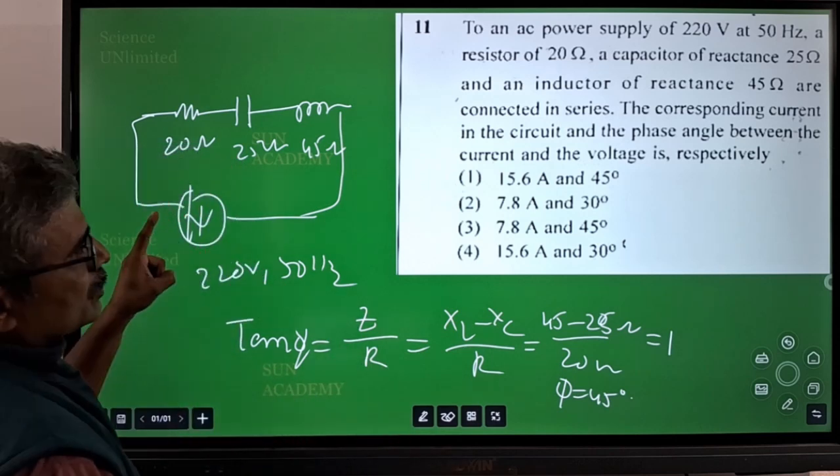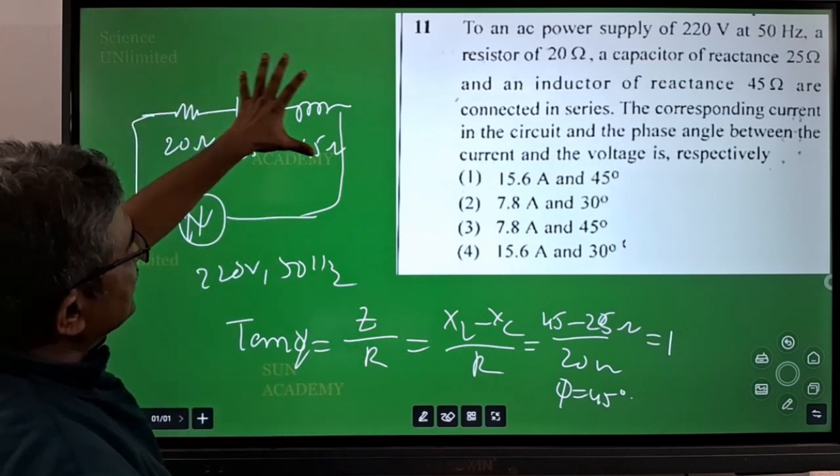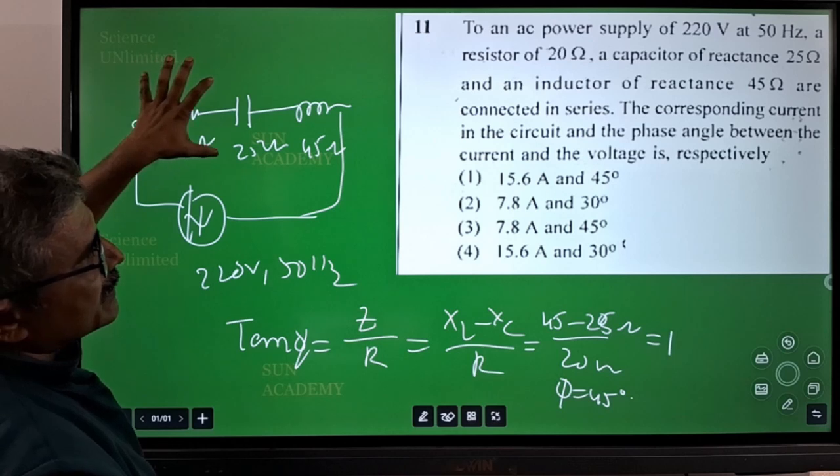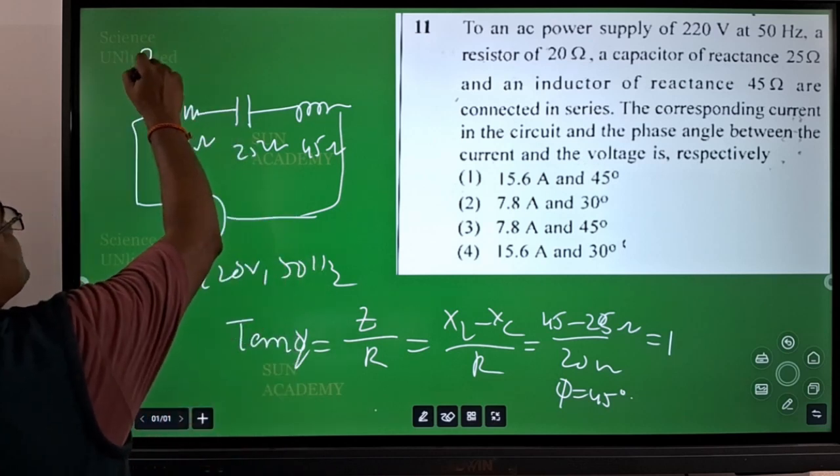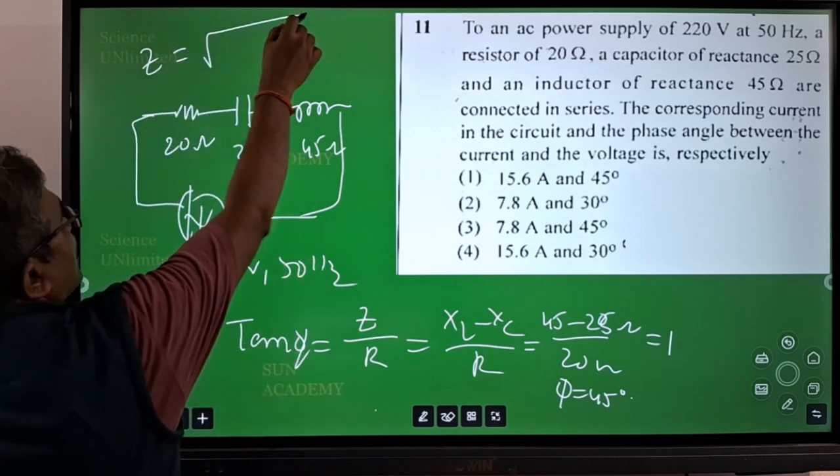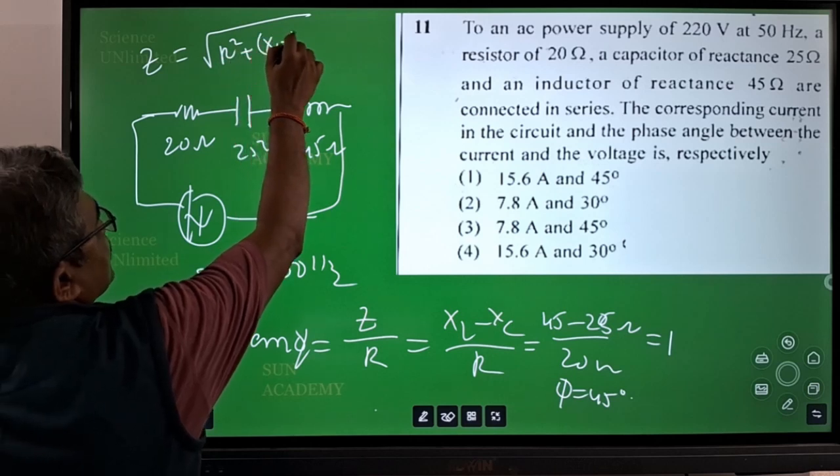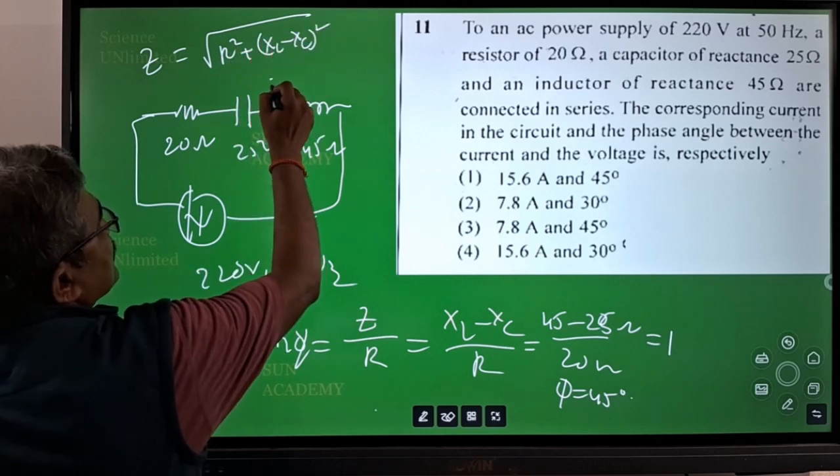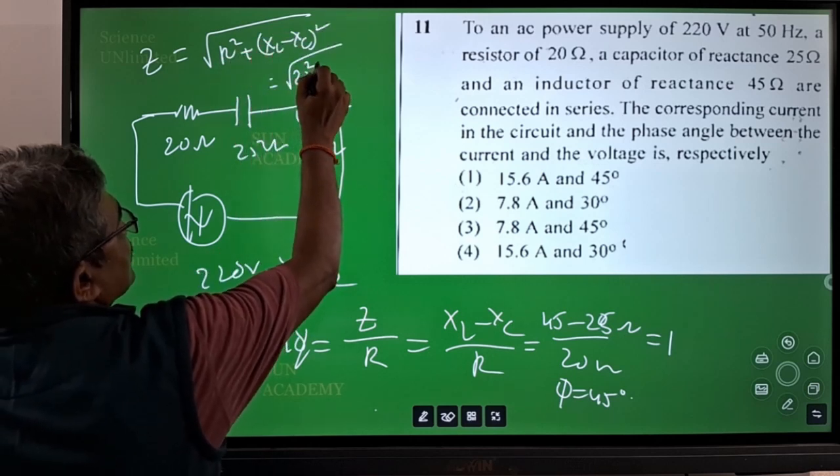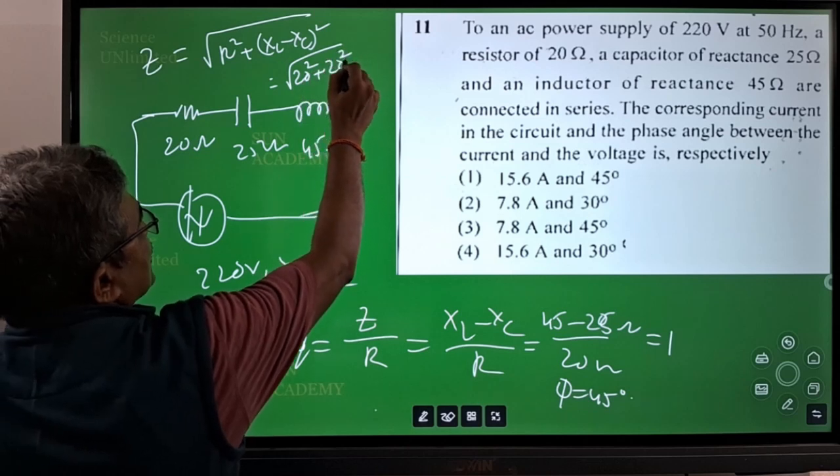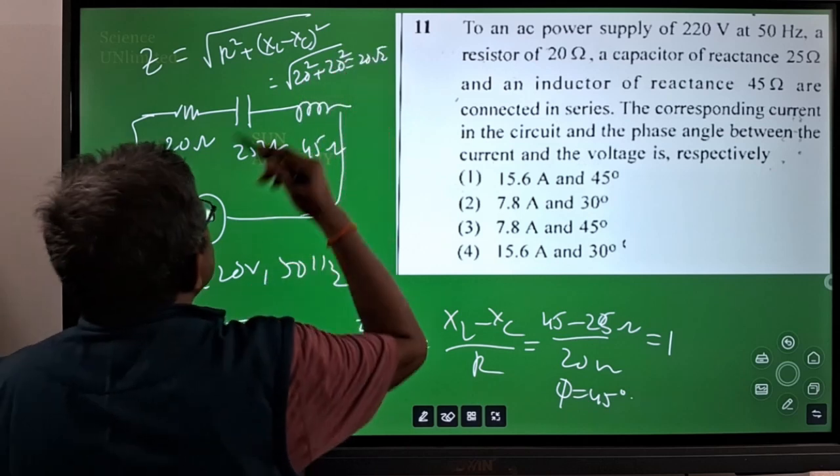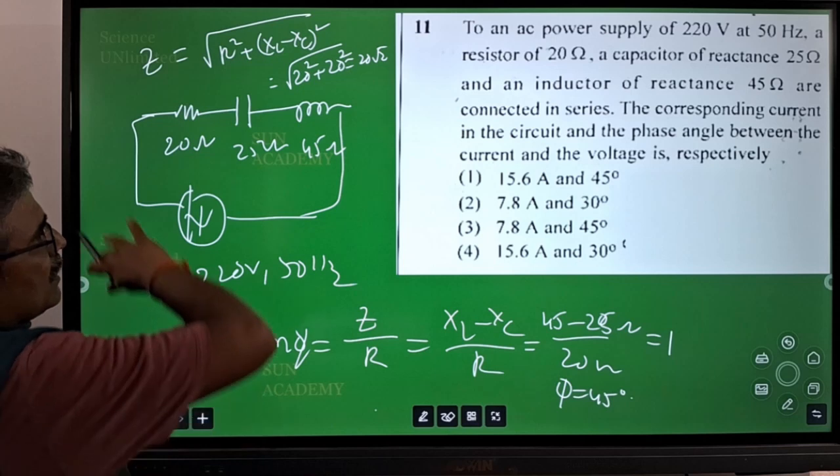Now, come to the current part. To find the current, we need to find the total impedance. Total reactance Z is equal to square root of R square plus XL minus XC whole square, which gives R square is 20 square. This is also 20 square, you will get 20 root 2 as the impedance of the total circuit.